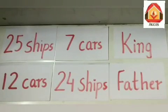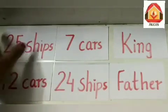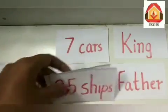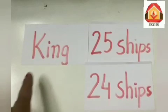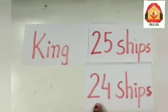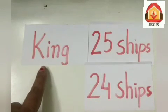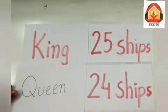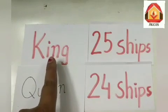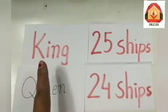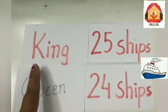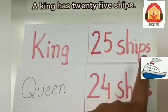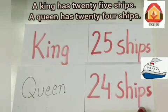Now let us do the second one. We will take the ships together. Let's take ships and the gender word king. We have king with 25 ships and 24 ships. The opposite gender of king is queen. We will use the article 'a' because king is not our family relation. So: a king has 25 ships. Same way, a queen has 24 ships. Now we have to find out the total number of ships they have.